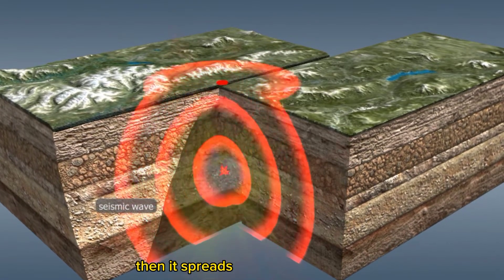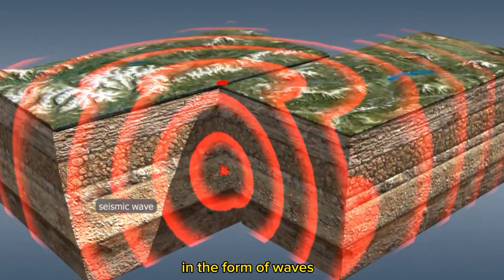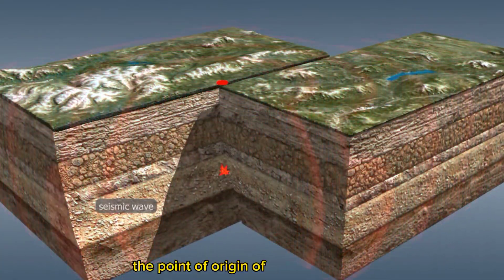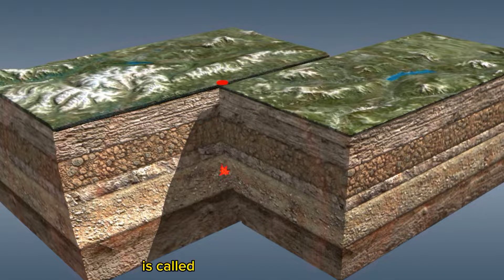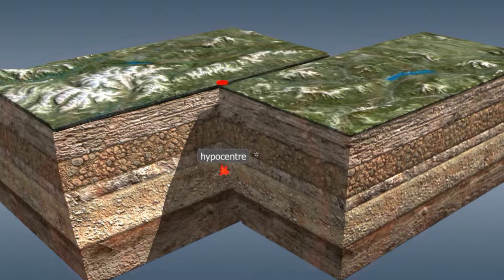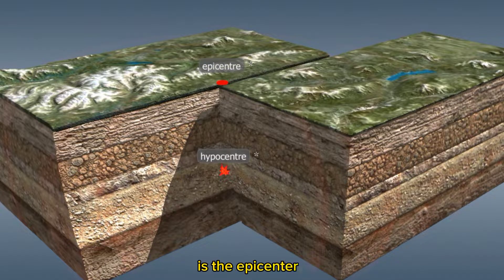Then it spreads out in all directions in the form of waves. The point of origin of an earthquake, where permanent deformation occurs, is called the focus or hypocenter. The point on the Earth's surface nearest to the focus is the epicenter.